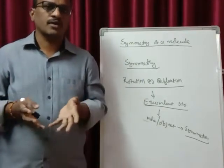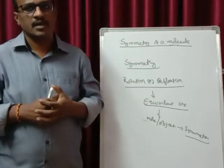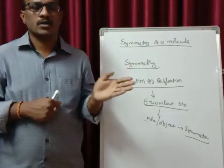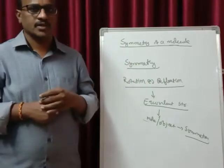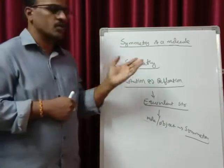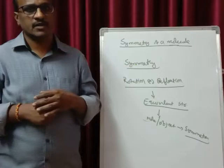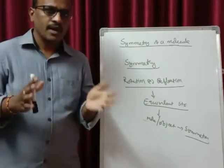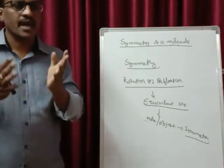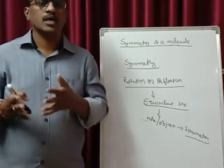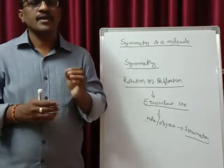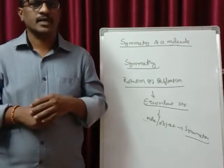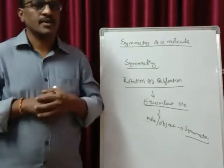Throughout this unit, what you are going to look at is whether the molecule gives you an equivalent structure or not. Either you do the rotation or you do the reflection, it should give you an equivalent structure. Any object on rotation or reflection, if it is giving you an equivalent structure, then we say that particular object or molecule has symmetry.